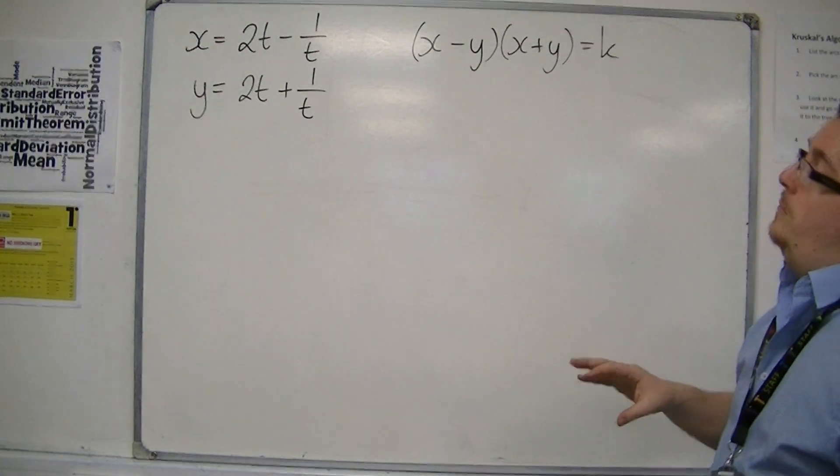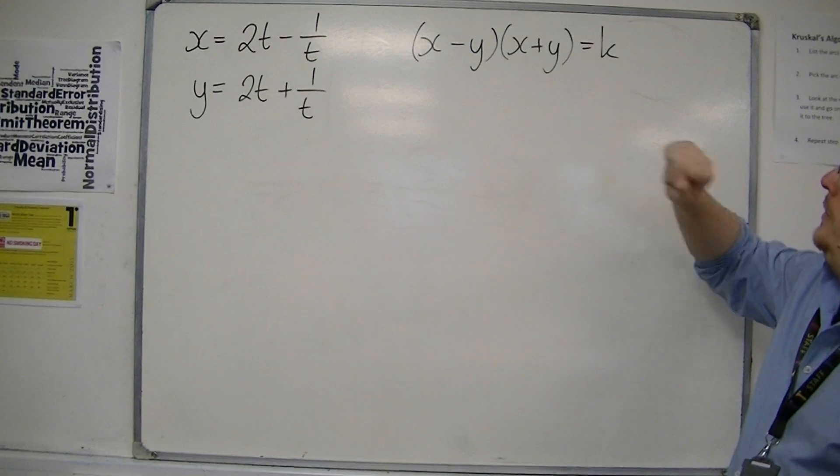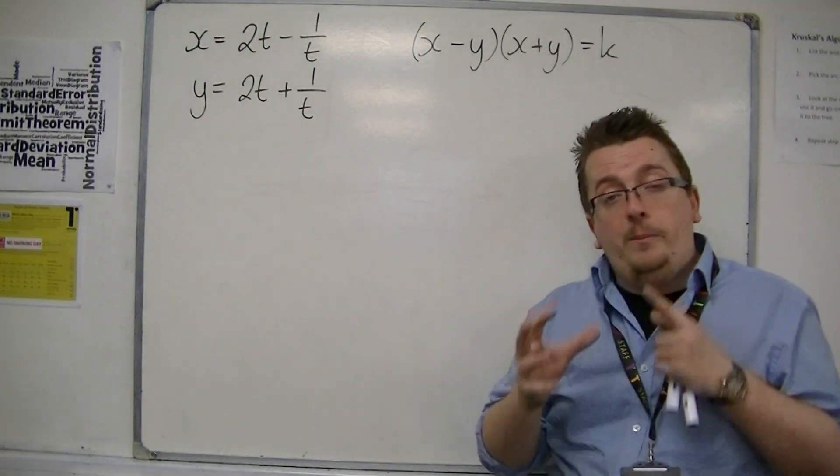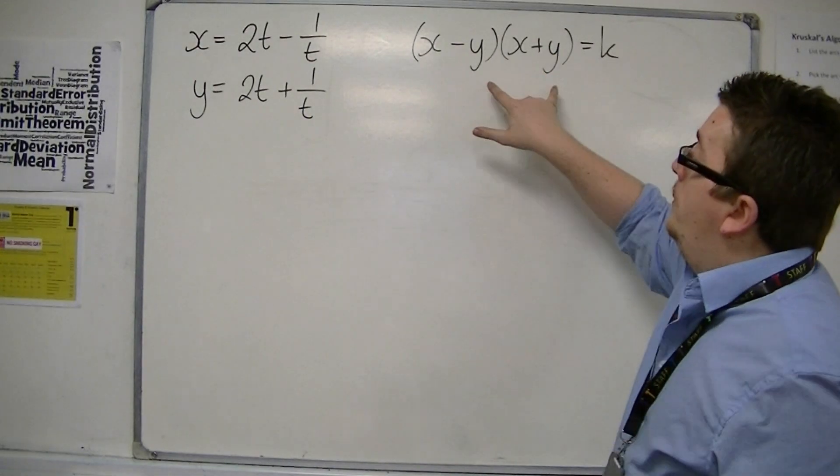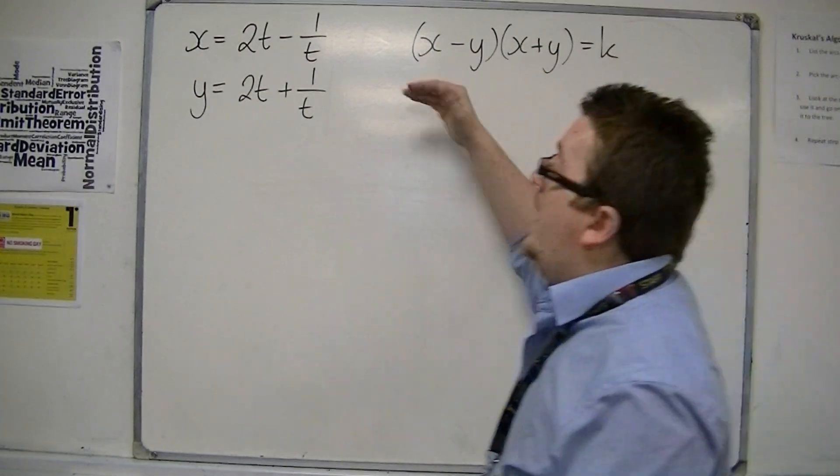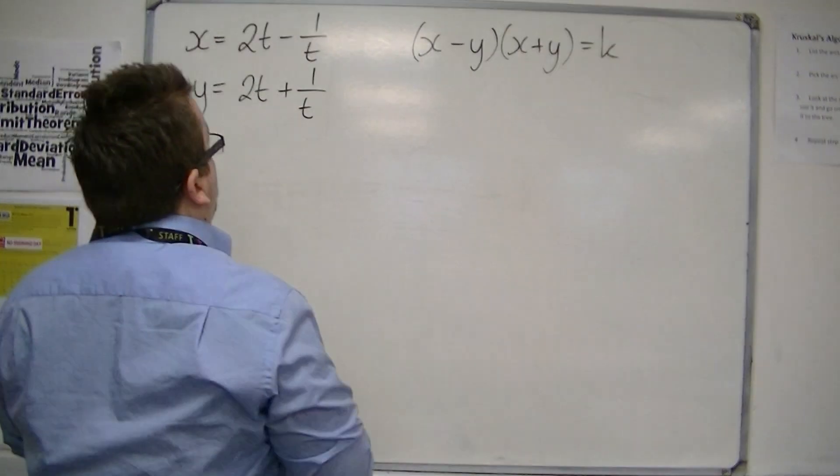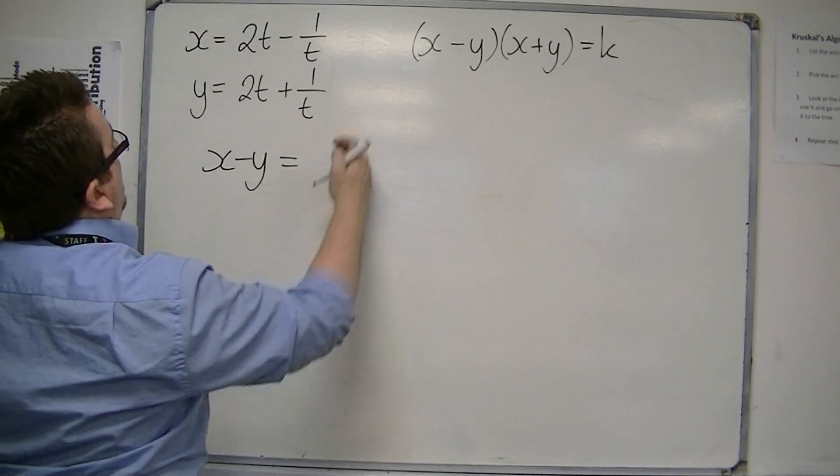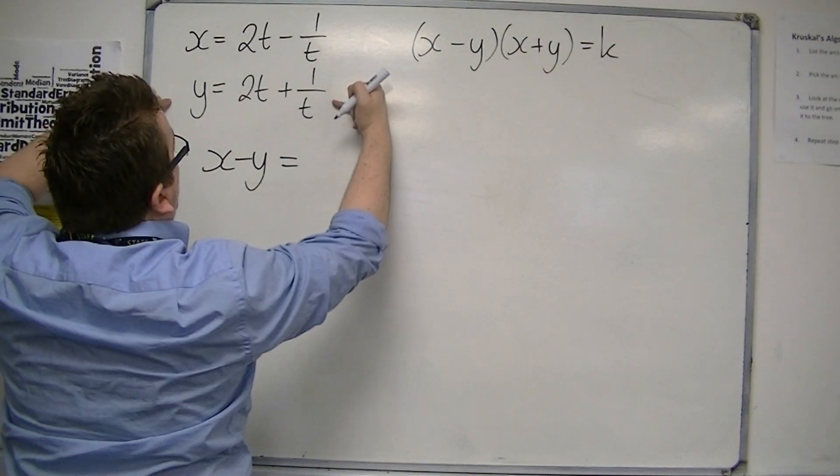Here is the example where we're given a format and we need to find that value of k. All this is is substituting into this equation. I have my x, I have my y, so if I find what x minus y is, that's going to be this equation take away this equation.